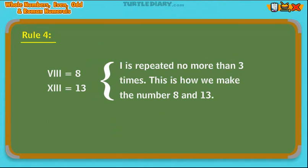Rule 4: Do not allow any of these four letters to repeat more than three times in a row. In these two examples, the capital I is repeated three times. This is how we create the numbers 8 and 13. Remember, I is the smaller value, so it goes after the V and X.